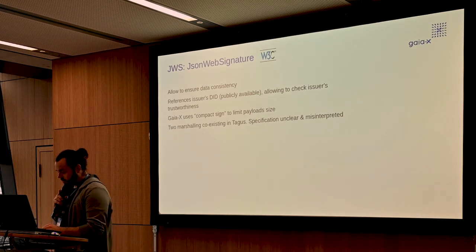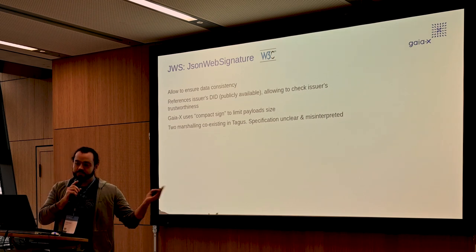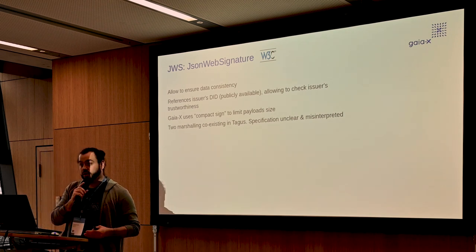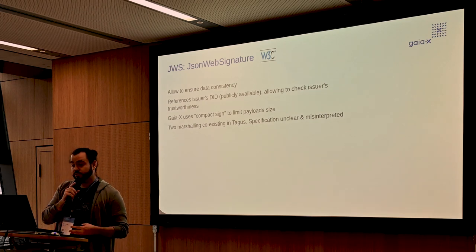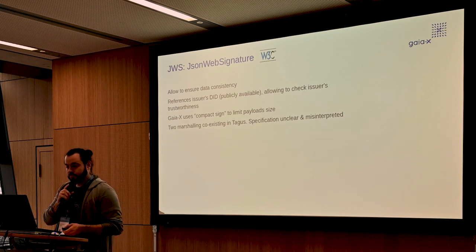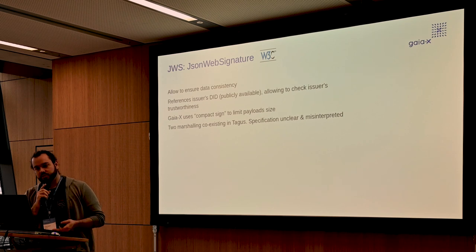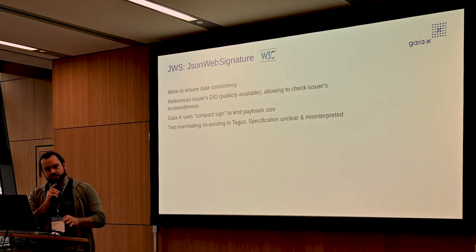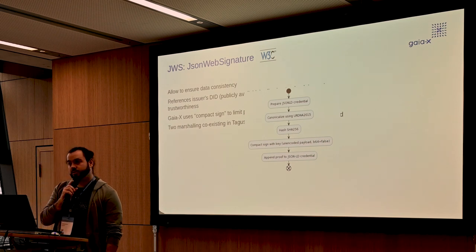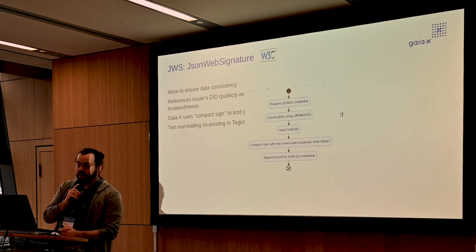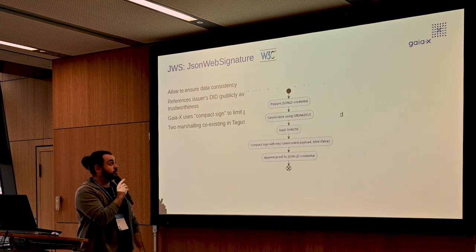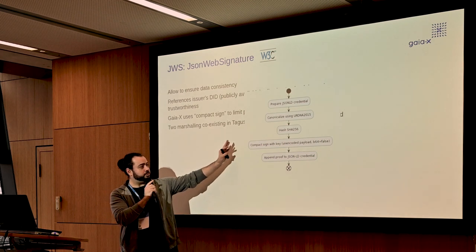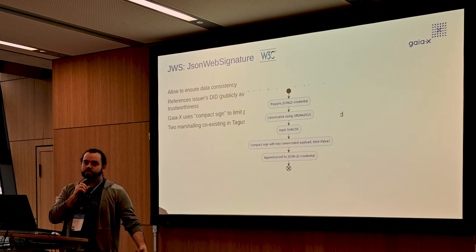JWS — if you are familiar with JWT tokens, that's part of the same specification. It allows ensuring data consistency. Basically, you have an issuer whose ID is publicly available, allowing you to retrieve its public key. You resolve the ID, get the public key, verify the signature, and you know the data was not tampered. In the Tagus release, we have two marshalling methods to sign payloads — the spec was not that clear at the time. We prepare the credential, canonicalize it using URDNA 2015, hash it with compact sign, and append the proof to the credential.